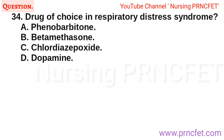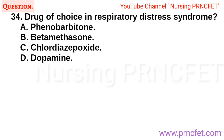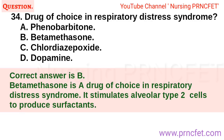Question 34: Drug of choice in respiratory distress syndrome: A. Phenobarbitone. B. Betamethasone. Correct answer is B. Betamethasone is the drug of choice in respiratory distress syndrome. It stimulates alveolar type 2 cells to produce surfactants.